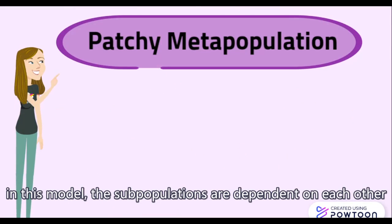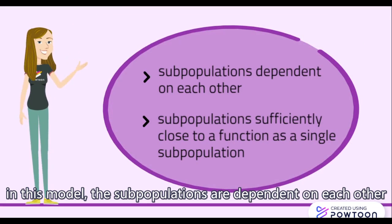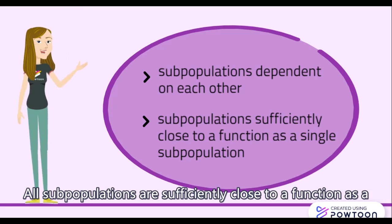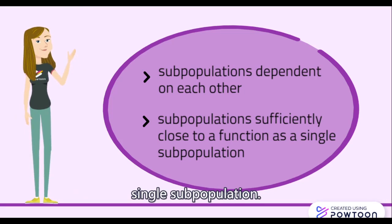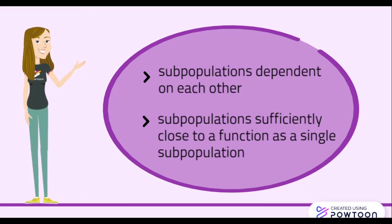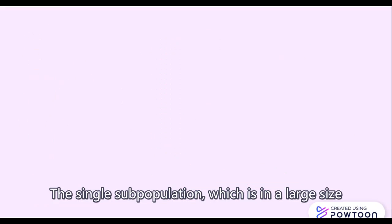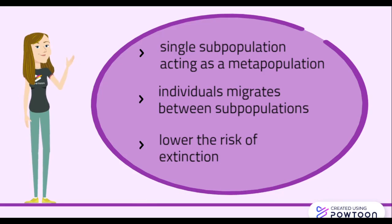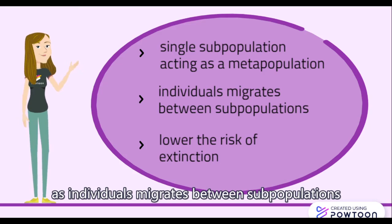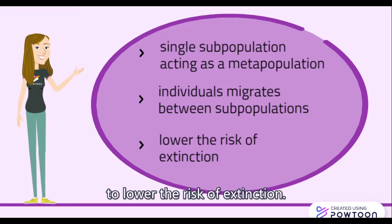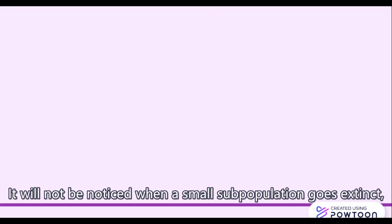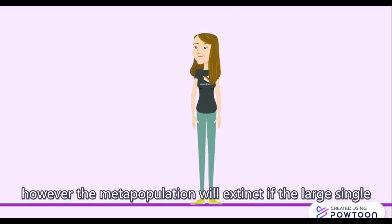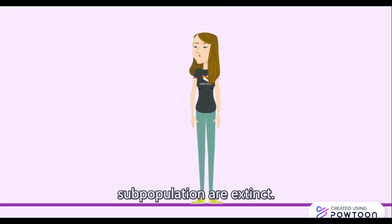In this model, the subpopulations are dependent on each other, and their demographics are closely linked. All subpopulations are sufficiently close to function as a single subpopulation. The single subpopulation, which is of large size, acts as the metapopulation in this model, as individuals migrate between subpopulations to lower the risk of extinction. It will not be noticed when a small subpopulation goes extinct. However, the metapopulation will go extinct if the large single subpopulation is extinct.